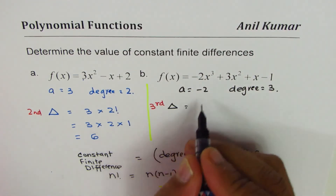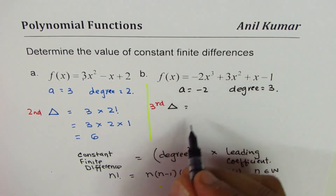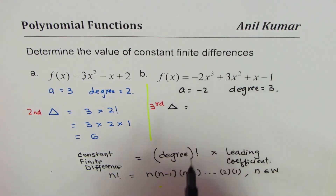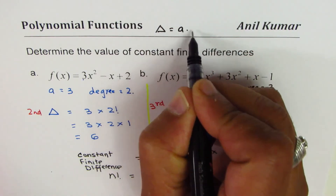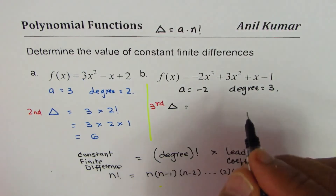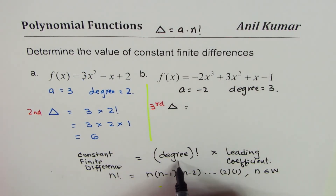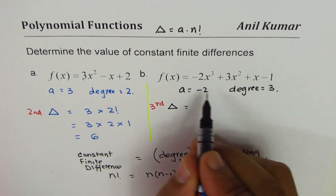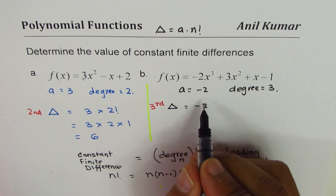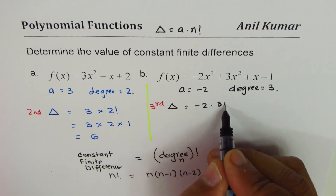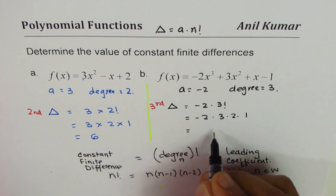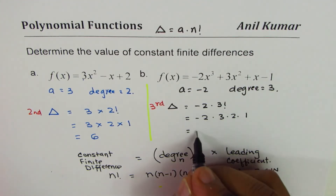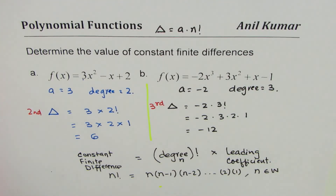The formula can be written as a times n factorial, where n is the degree. So the constant difference is −2 times 3 factorial, which means −2 times 3 times 2 times 1. That gives us −2 times 6, which equals −12. So the constant finite difference for Part B is −12.